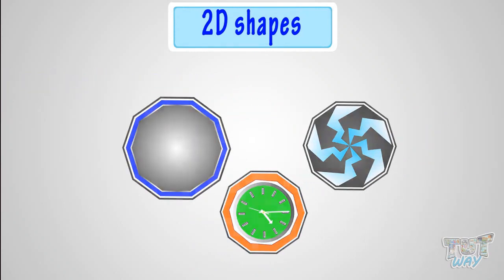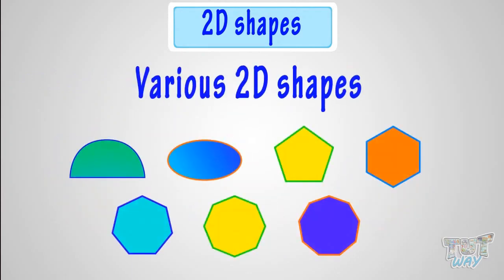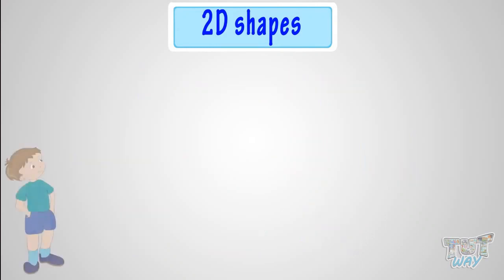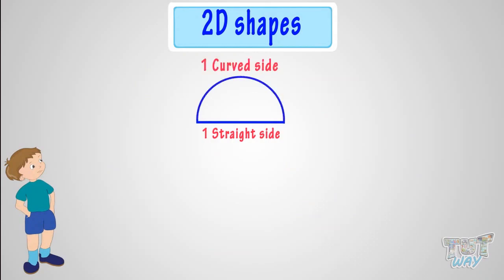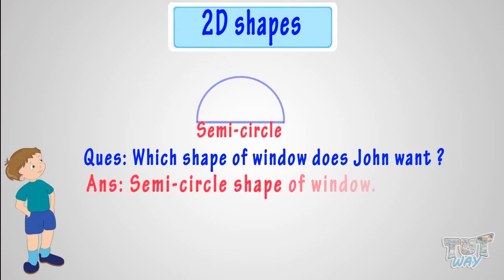Today we learned what polygons are and various 2D shapes. John wants to have a window in his room that has one straight side and one curved side. Which shape of window does John want? John wants a semi-circle shape of window.